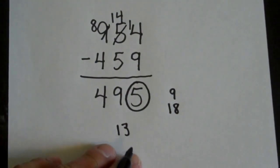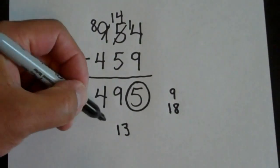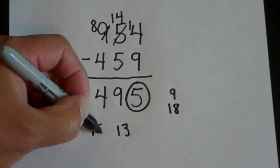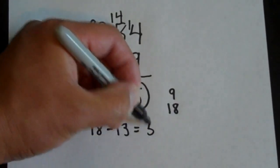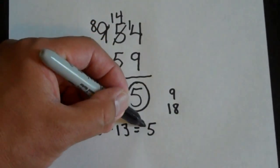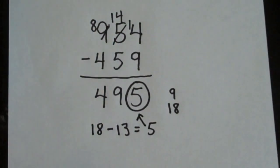What you're now going to do is once they tell you that their number is 13, you're going to subtract that from 18. And you're going to get 5. And that's how you know what number they circled.